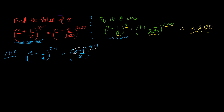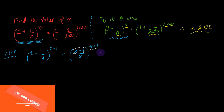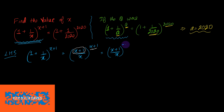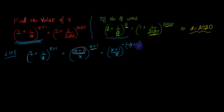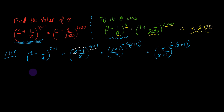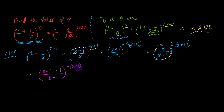Now we have to try to bring the numerator into the denominator, and we are going to do this simply by negating the power. So this becomes negative of negative (x+1), and this minus sign gets adjusted into the fraction, giving us (x/(x+1))^(-(x+1)). This expression can now be written as ((x+1-1)/(x+1))^(-(x+1)).